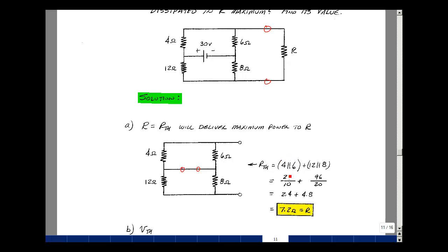So product over the sum, so 24 over 10, 96 over 20. We're going to add those two together. Turns out to be 2.4 and 4.8, so 7.2 ohms.